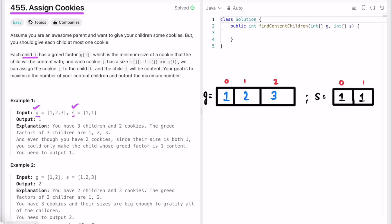Every child has a greed factor, so the length of g equals the number of children. g of i represents the minimum size of a cookie that the child will be happy with. Each cookie has a size j which is represented in the s array. If s of j is greater than or equal to g of i, if the cookie size is greater than or equal to the greed of the child, then that cookie can be assigned to that child.